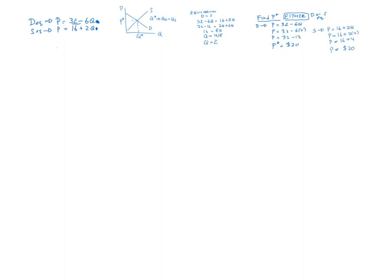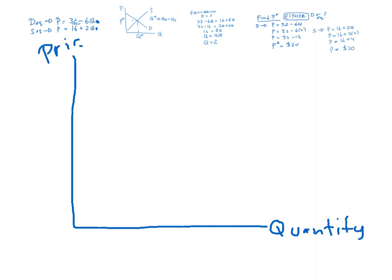And then you can draw up this graph. If we ask you to draw the graph, draw the graph. You can draw it in full. We write quantity. And we write price. Careful how you draw your graph. Because we have got 32 as our maximum willingness to pay for the demand equation. And 16 as our minimum willingness to sell.